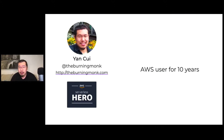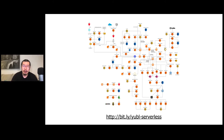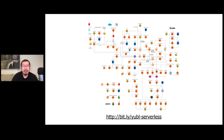My name is Yan Chui. I've been using AWS for over 10 years now. Nowadays I'm an independent consultant and also one of the AWS Serverless Heroes. For the last couple of years I've been focusing primarily on serverless technologies, including migrating another social network to serverless a couple of years ago, which was one of my first forays into the serverless space. You can read all about that with the link at the bottom of this screen.